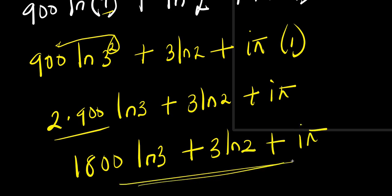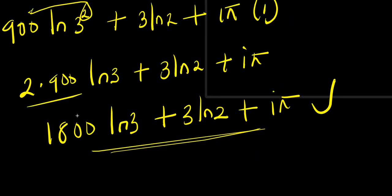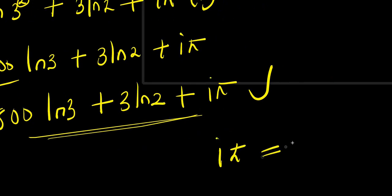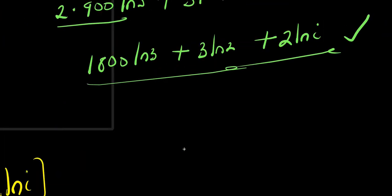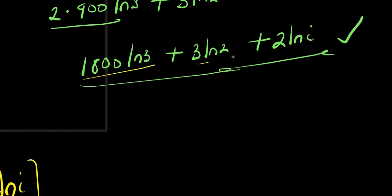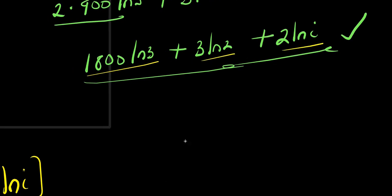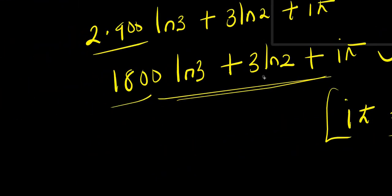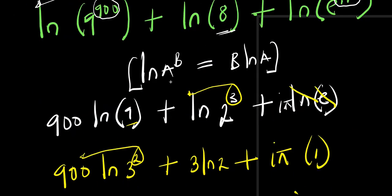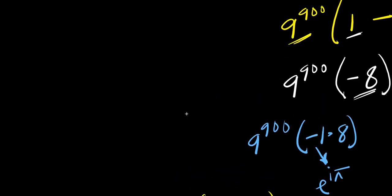This is our solution using the second method. Note that iπ equals 2 ln i, so these two solutions are the same. In the first method we had 1800 ln 3 plus 3 ln 2 plus 2 ln i, and 2 ln i equals iπ — confirming both solutions are equivalent.